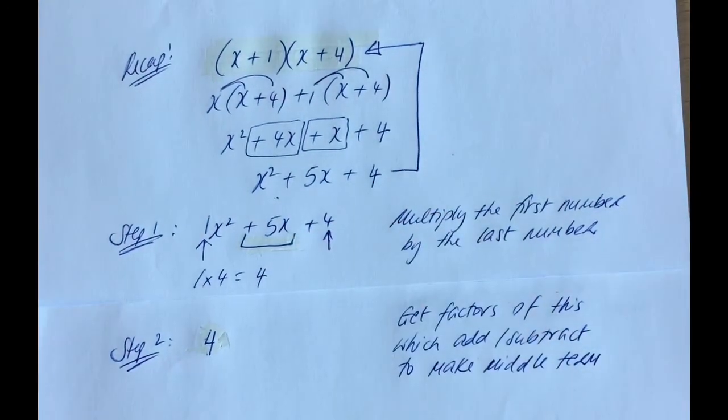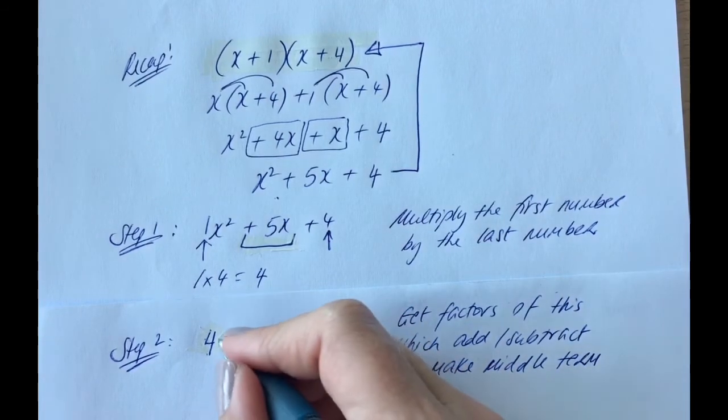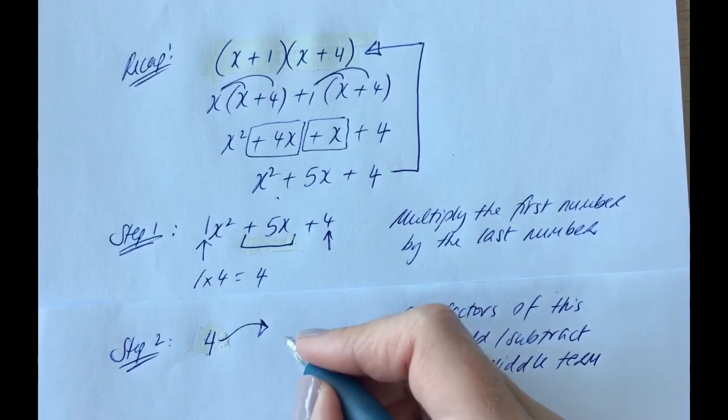The middle term is this 5x. In other words, it's a plus 5 is what we're interested in, really, here. So factors of 4. Well, factors of 4, what times what makes 4?